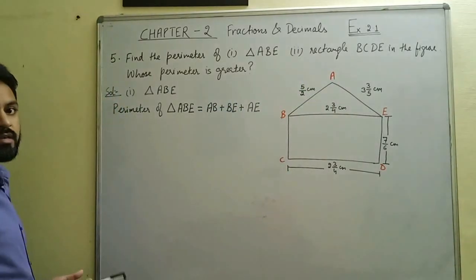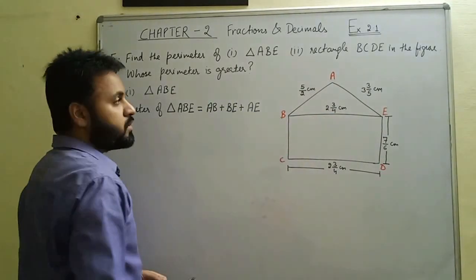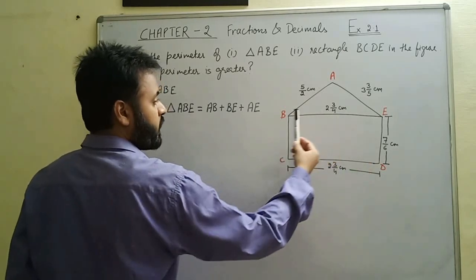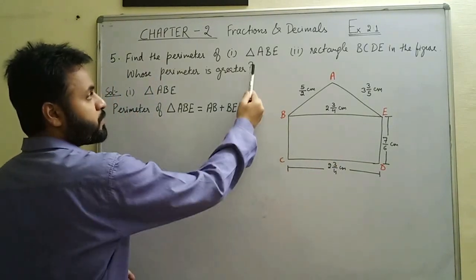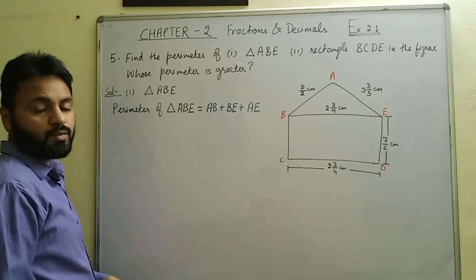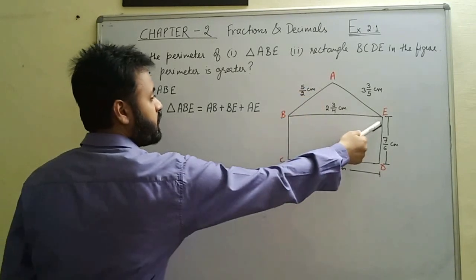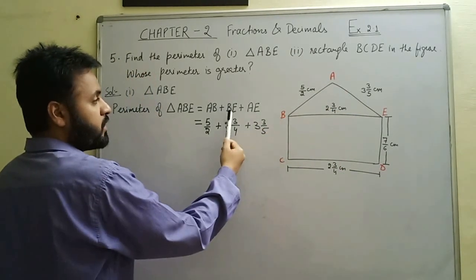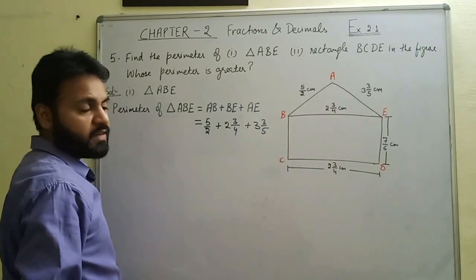We are told which perimeter is greater. ABE is the triangle and BCDE is the given rectangle, with dimensions given in the figure. For triangle ABE, the perimeter is the sum of all its sides: AB + BE + AE. Side AB is 5/2 cm, BE is 2¾ cm, and AE is 3⅗ cm.